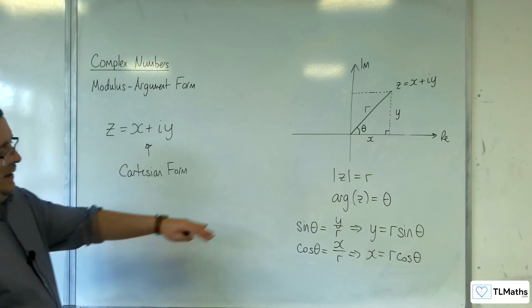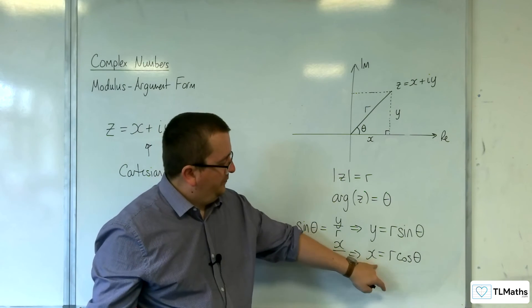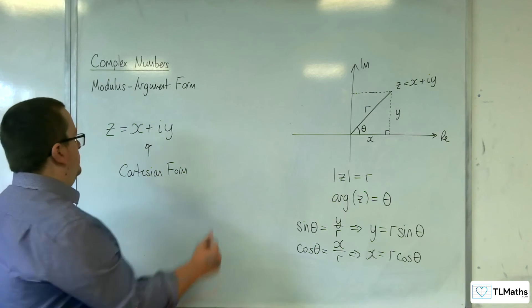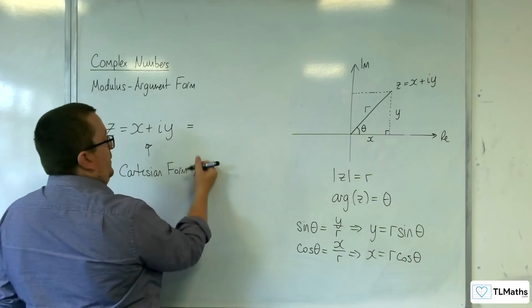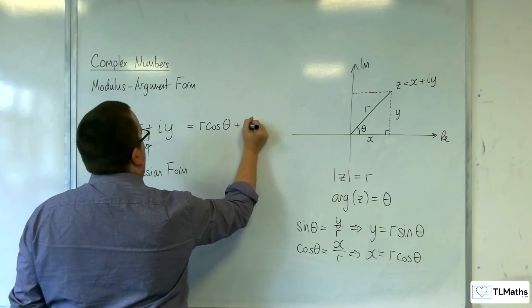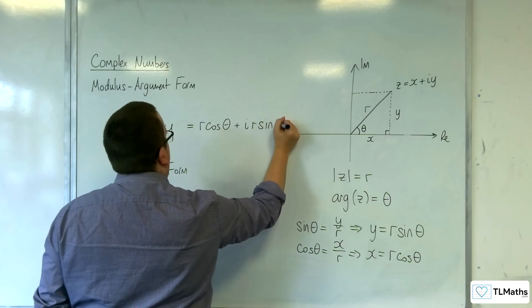Now, if I was to replace the X and the Y here with those, I would get R cosine theta plus I R sine theta.